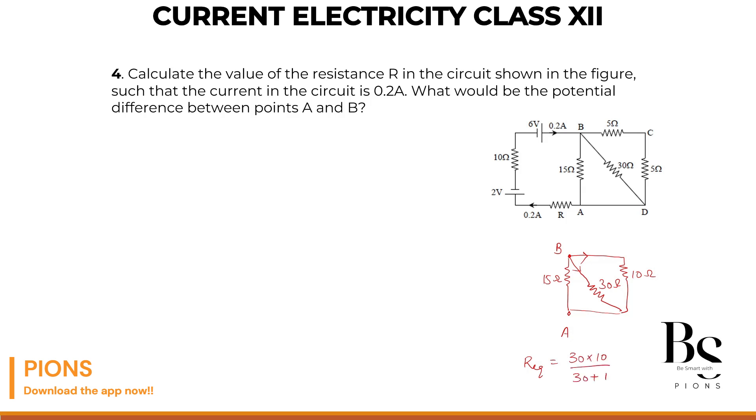We can directly use this to do calculation a little faster. So R1 into R2 upon R1 plus R2. So 300 whole divided by 40. Let's cancel this with this. 2's are 15. 15 by 2. We got the equivalent.